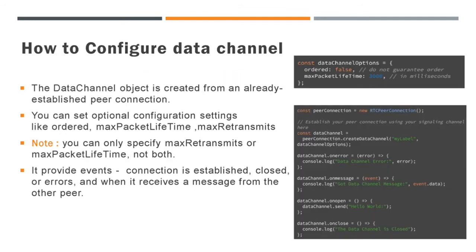Next, let us see how to configure the channel. The data channel object is created from an already established RTC Peer Connection. You can set optional configuration settings like ordered, maximum packet lifetime, and maximum retransmits. One important thing: you can only specify maximum retransmits or maximum packet lifetime, not both. I have provided a sample screenshot of the data channel connection, which will give you a better idea of how to create and configure an RTC Data Channel. It also provides different events and methods — such as when the connection is established, closed, or encounters errors, and when it receives a message from the other peer.